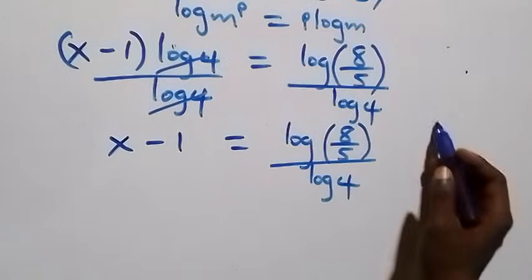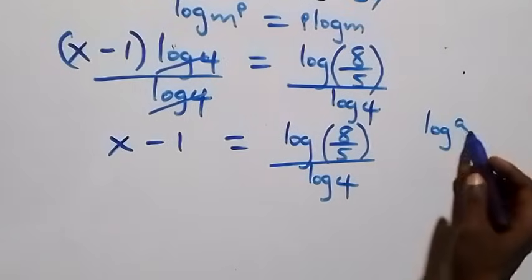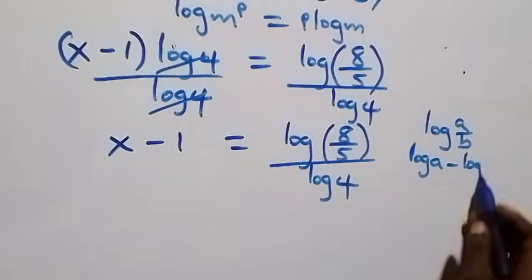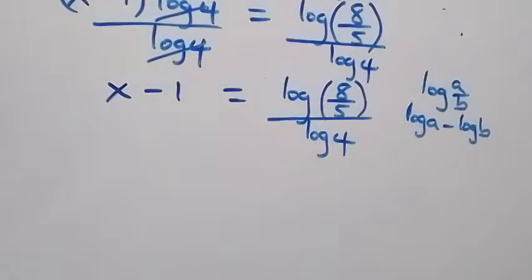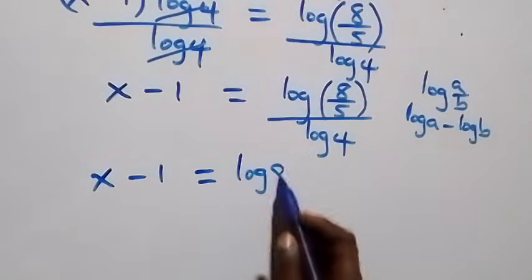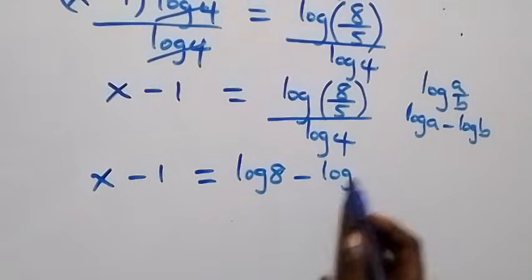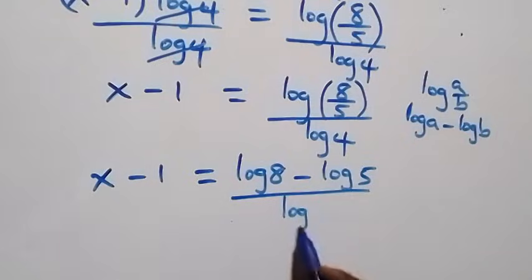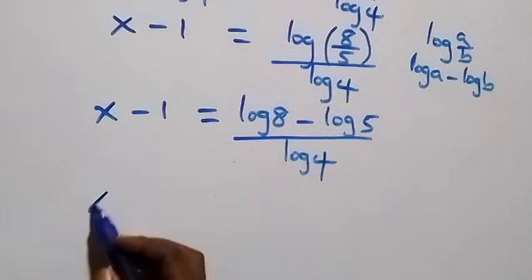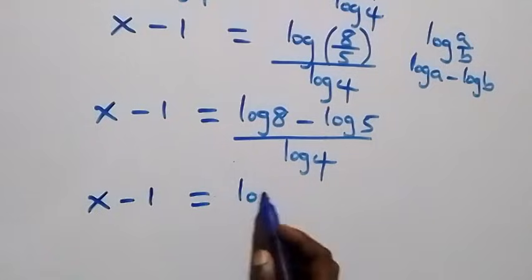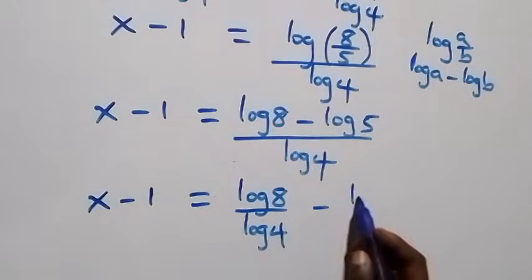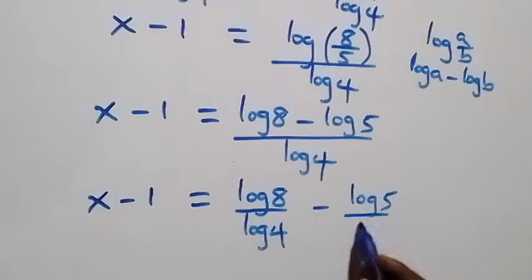And what we have here follows from the log rule: when we have log(a over b), it is the same as log a minus log b. That is, here we have x minus 1 equals to log 8 minus log 5, then over log 4. And next step we separate this into two fractions: x minus 1 equals log 8 over log 4, then minus log 5 over log 4.